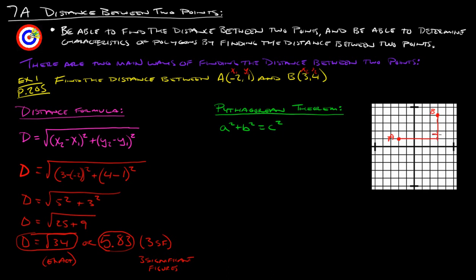This makes a nice right triangle. Now we have a right triangle where we can use the Pythagorean theorem. Here are our two legs — A squared and B squared. Counting the units: this side has a distance of 5, and this side has a distance of 3. So we do 5 squared plus 3 squared equals C squared: 25 plus 9 equals C squared. We take the square root: C equals the square root of 25 plus 9, which is the square root of 34.